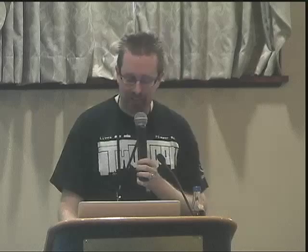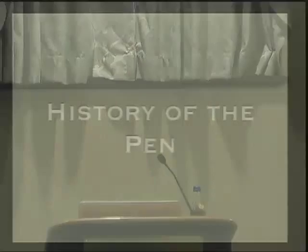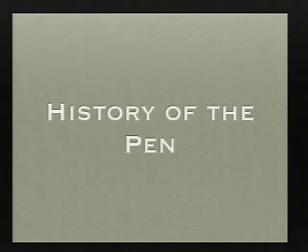Now that we've talked about some of the goals, the next big thing is figuring out how we got here. So we're going to go through a history of pens. 3000 BC: the first evidence of reed-based pens being used, in the first dynasty in China. The picture there shows an example of how a reed-based pen is used.